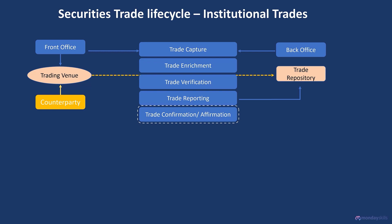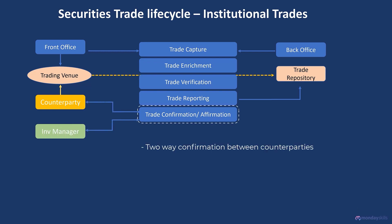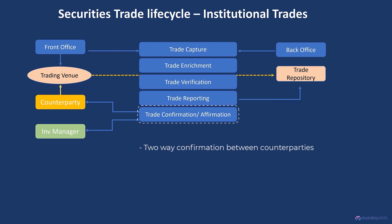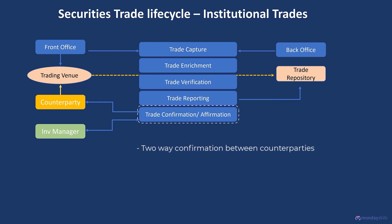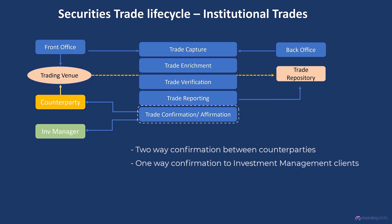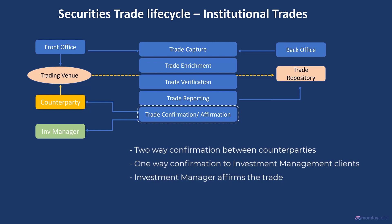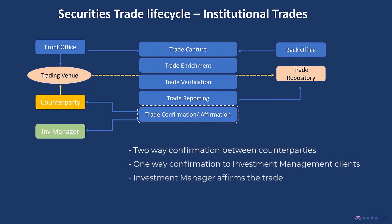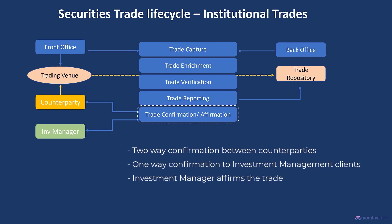The next step in the trade lifecycle is trade confirmation. The broker would send a confirmation to the counterparty, and the counterparty may also send a trade confirmation. This two-way confirmation process ensures that the trade details recorded by the back offices of both counterparties match. The broker would also send a confirmation to the institutional investor, who would verify the trade details and send an affirmation to the broker indicating that the trade is in order and they accept the trade details.